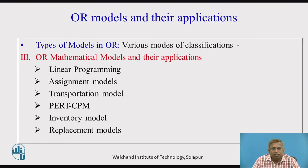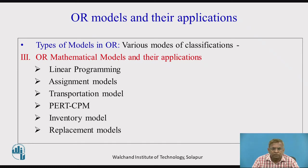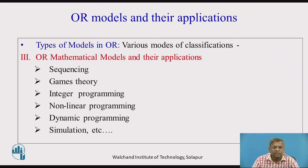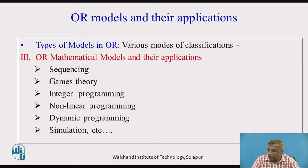Inventory control models deal with every organization managing some items or products. The question is: should you buy grocery requirements every day, per week, per month, or per year? In industry, the question is which items in what quantity should be bought so that overall inventory-related costs are kept minimum. Replacement models address when it is best to replace equipment that is subject to wear and tear. Sequencing deals with which jobs should be processed first so that machine idle time is minimized, total throughput time is kept short, and non-value-adding time is cut down.